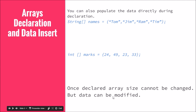Once declared, you cannot change the size — you cannot add a fifth element. However, data can be modified. You can definitely change the value in the zeroth element or any element. For example, if you want to store 'Sarah' instead of 'Tom', you say 'names[0] = Sarah'. So you can change the data but you cannot change the size of the array.